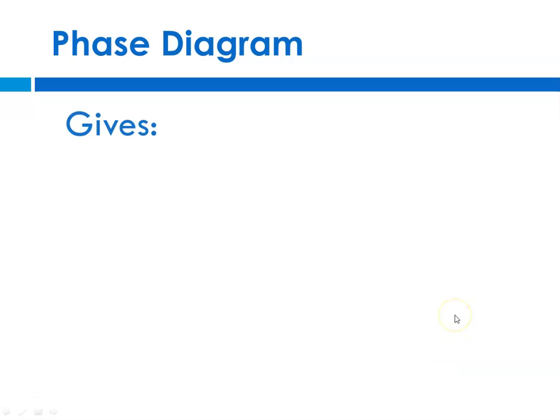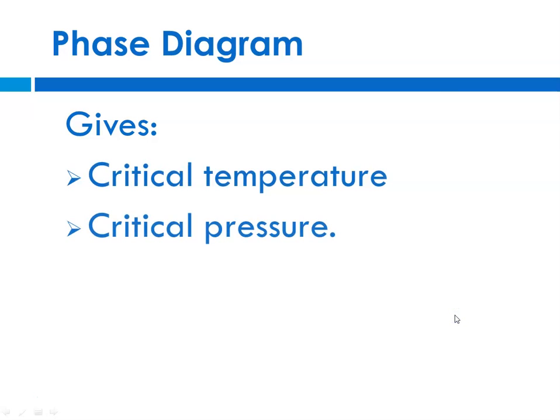So the phase diagram gives you some very valuable information. It tells you a critical temperature, a critical pressure, and the so-called critical point, all of which I will define in a moment or two.